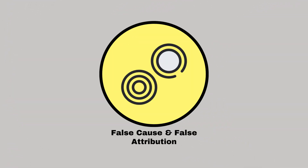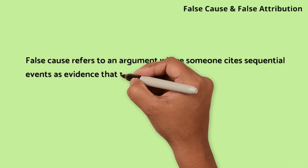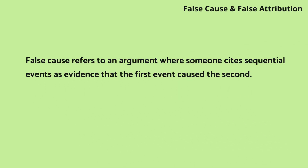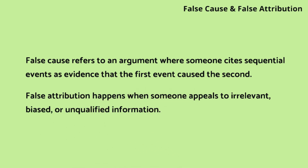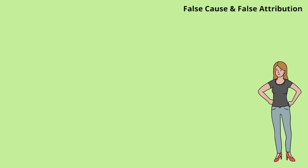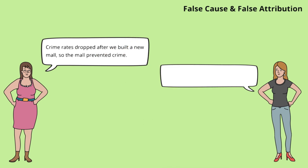False cause and false attribution. False cause refers to an argument where someone cites sequential events as evidence that the first event caused the second. False attribution happens when someone appeals to irrelevant, biased, or unqualified information. Emily confuses correlation with causation based on coincidental timing, and Maria challenges this assumption, reminding us to distinguish between correlation and true causation.